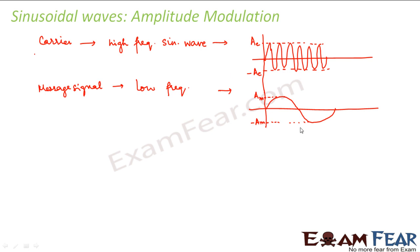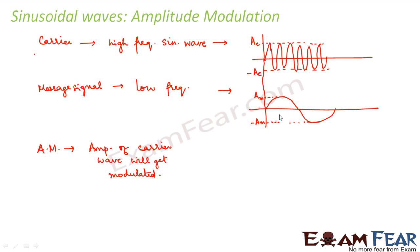Now we have a carrier wave and a message signal. What is amplitude modulation? In amplitude modulation, the amplitude of the carrier wave will get modulated. There will be no change to the frequency of the carrier wave — the frequency will remain the same. The amplitude will vary as per the message signal, and after modulation it would look somewhat like this.